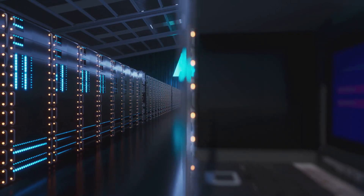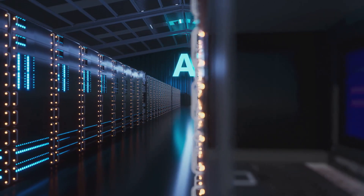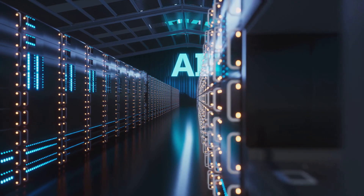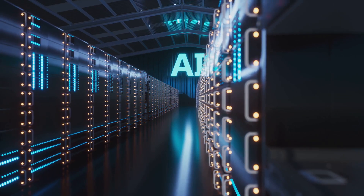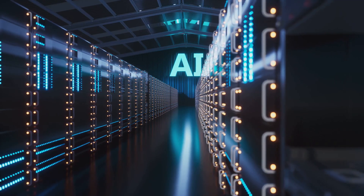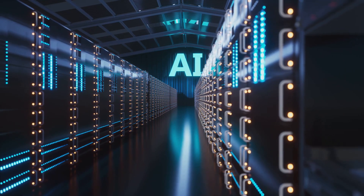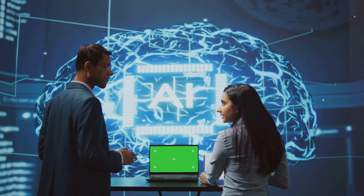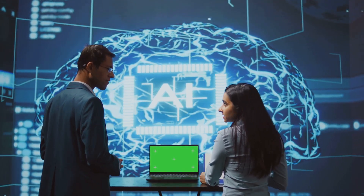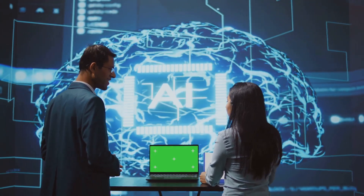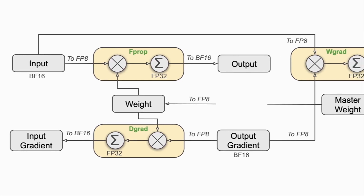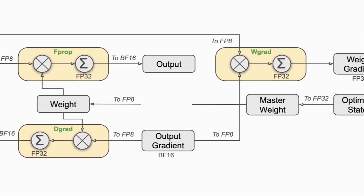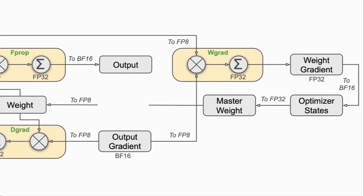To optimize training, DeepSeek V3 utilizes a technique called dual-pipe pipeline parallelism. This method overlaps computation and communication tasks, minimizing idle times and enhancing overall training efficiency. An innovative aspect of DeepSeek V3's training is its use of FP8 mixed precision — by employing 8-bit floating point calculations, the model reduces memory consumption and accelerates training, all while maintaining high accuracy.